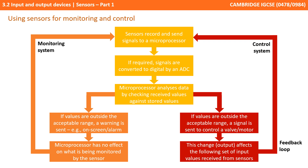Going down the red route, if the values are outside the acceptable range, we send some kind of control signal to, say, operate a valve or an actuator connected to a motor. This output actually now affects the following set of input values received from the sensor. We call this a feedback loop.